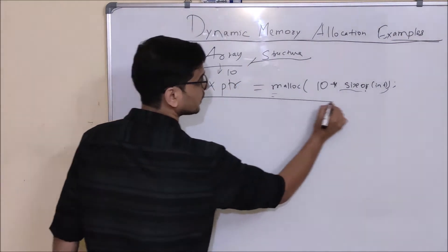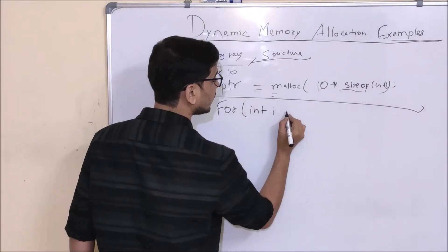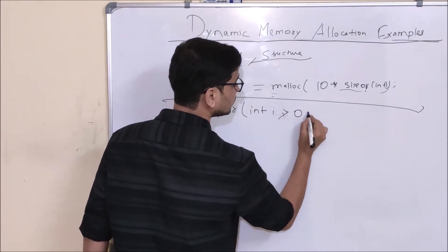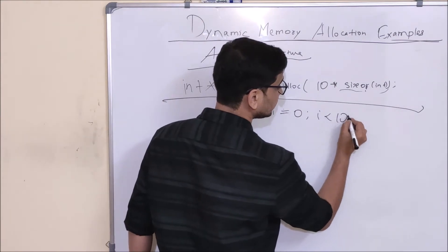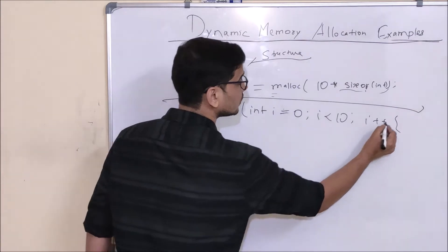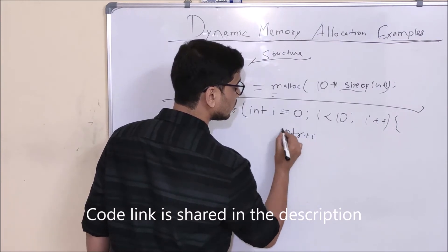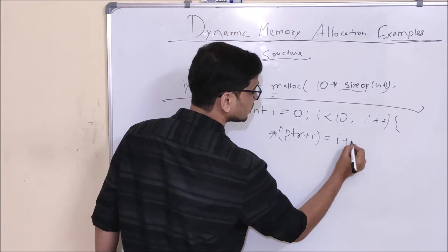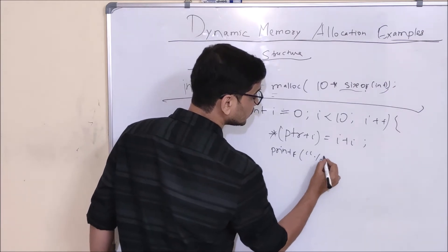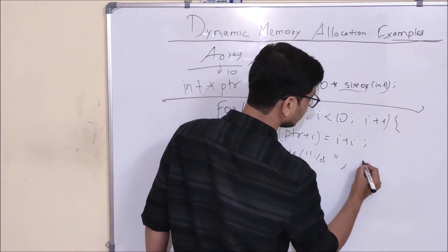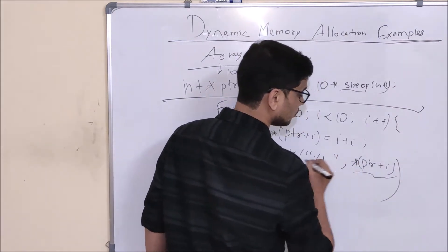Now first let's see the pointer dereferencing technique. I am going to run a loop: for (int i = 0; i < 10; i++). In this for loop I will update the value first, and in the next line I am going to print the value — printf of %d with *(PTR + i).